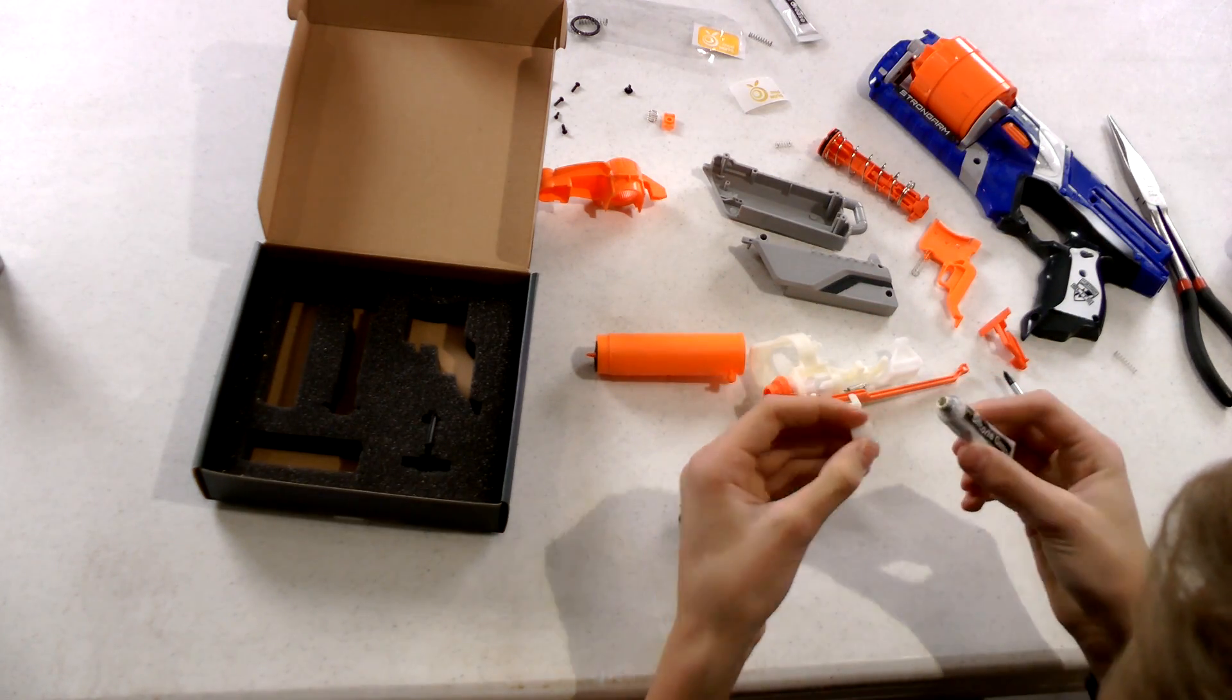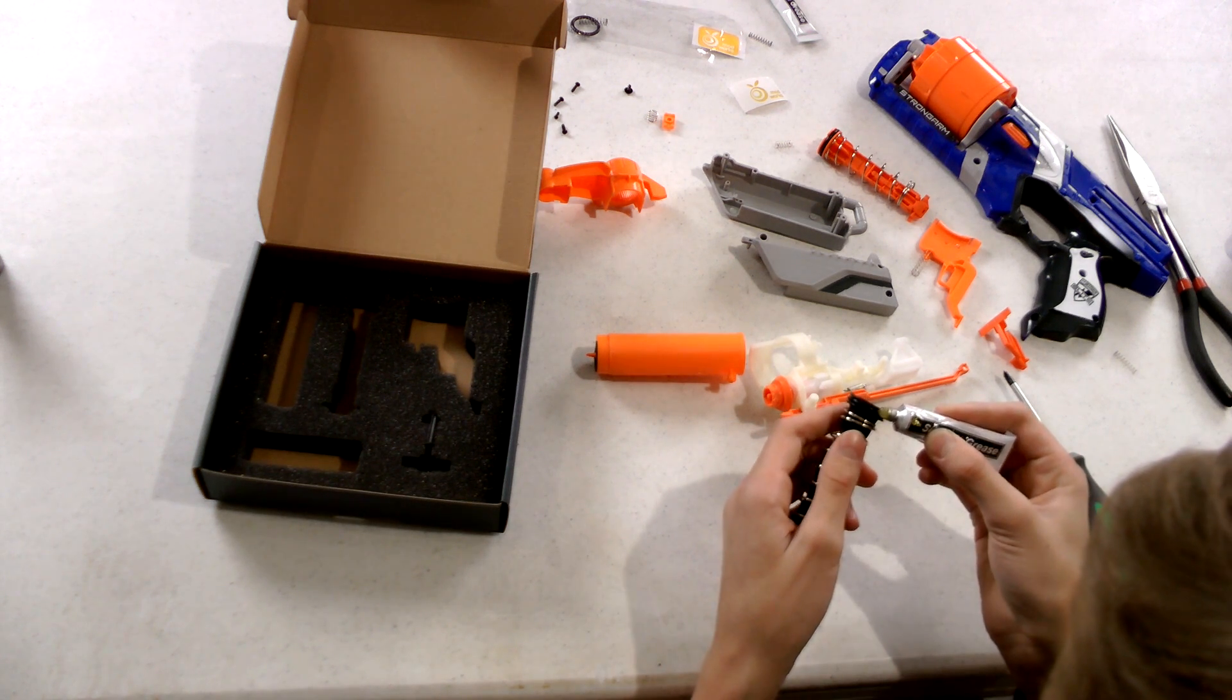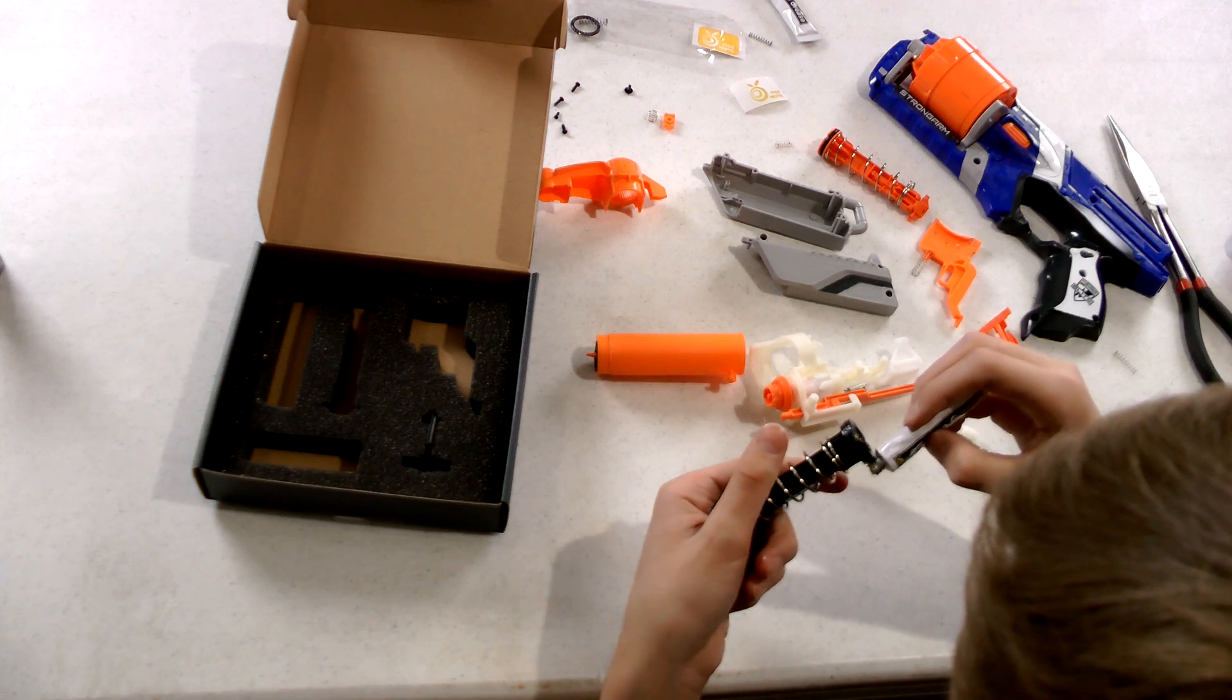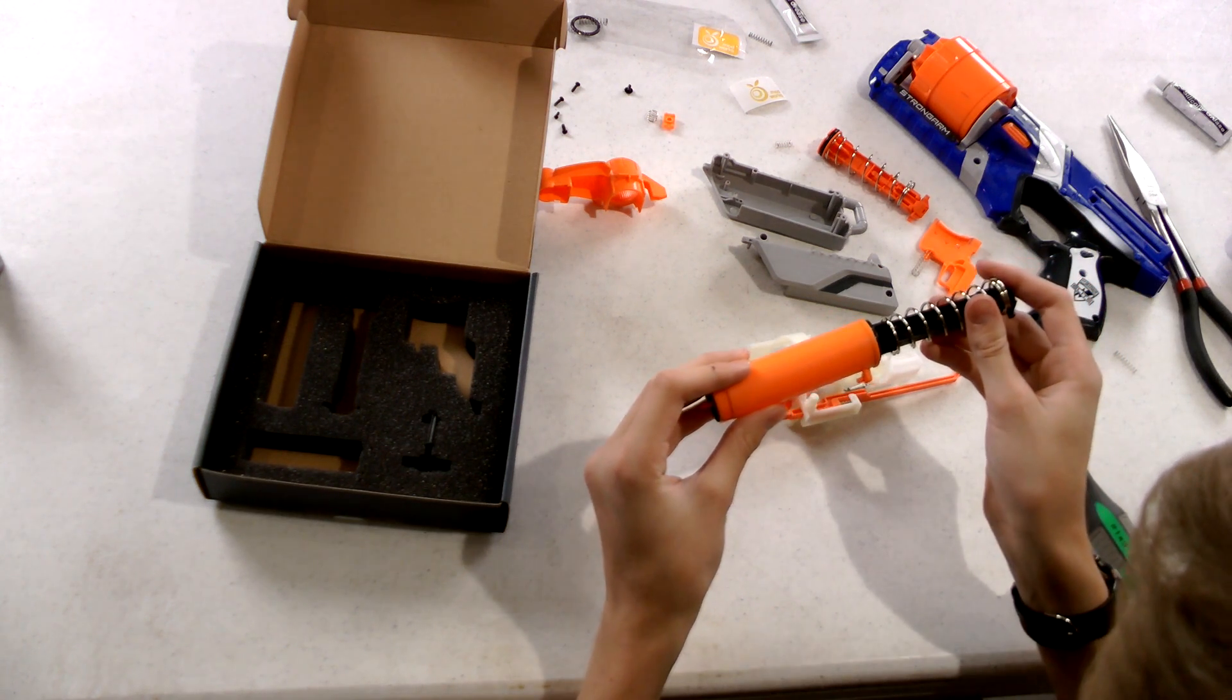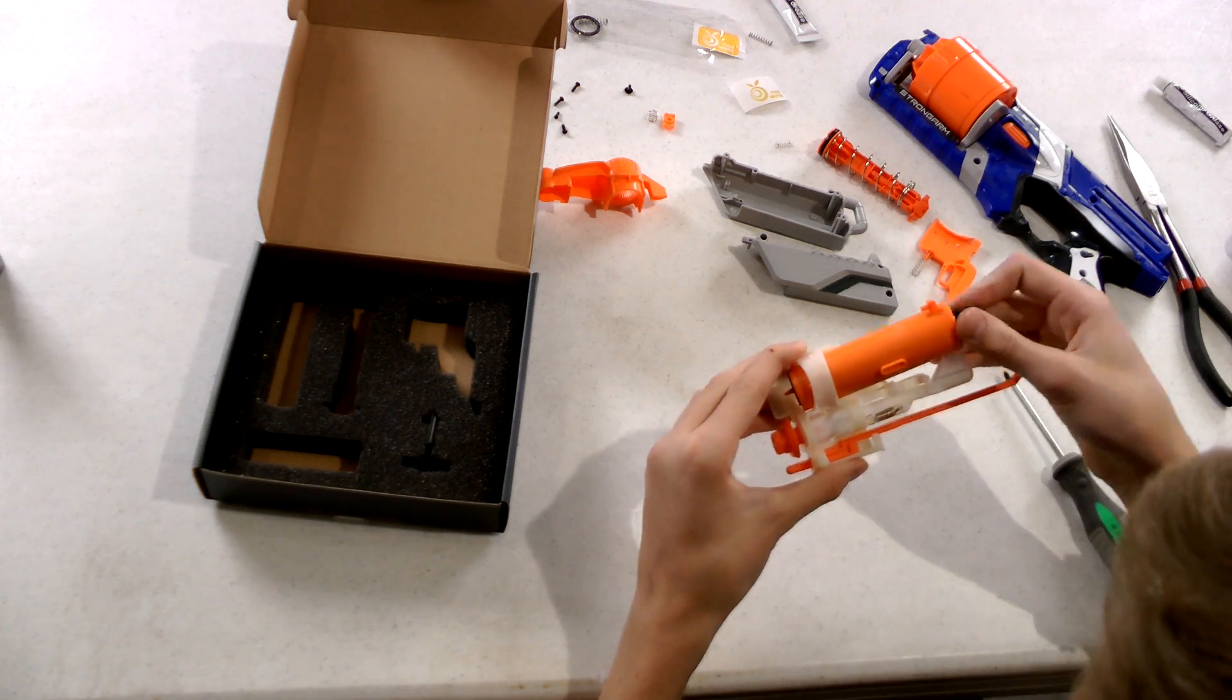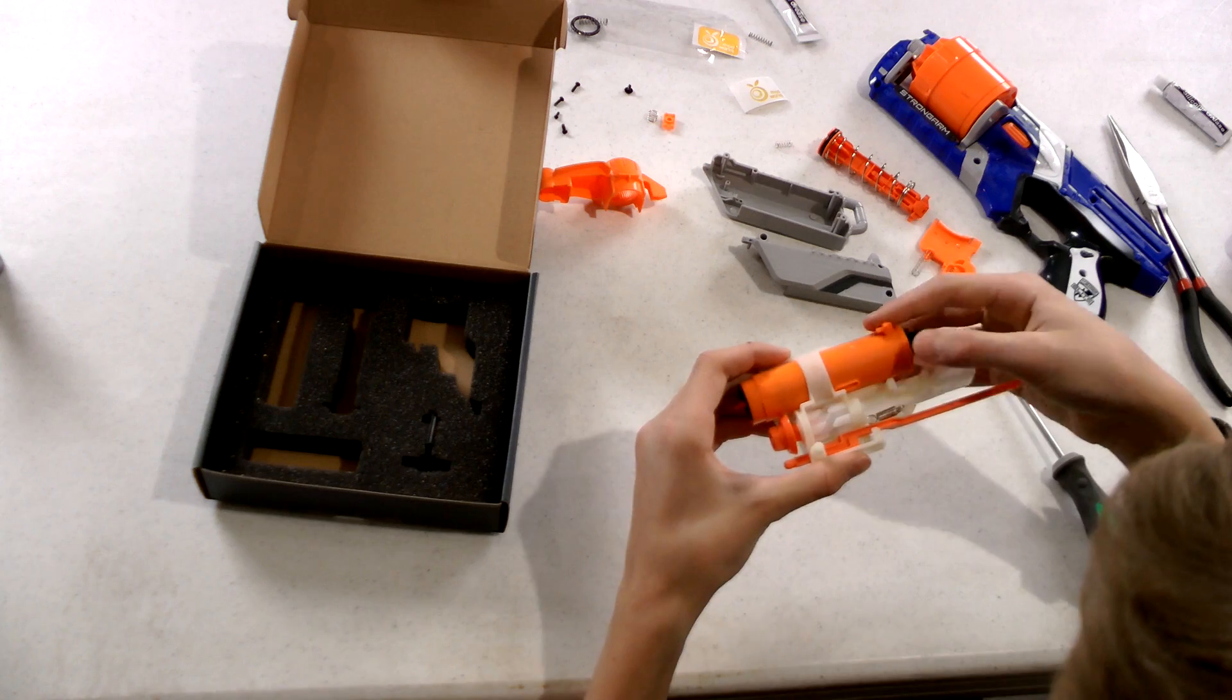This silicone grease is really nice stuff. What you want to do is just kind of put a lot on. So now we can start putting this gun back together. I'm just going to put this piece in here. Put this in from the back. It should fit in just like this.